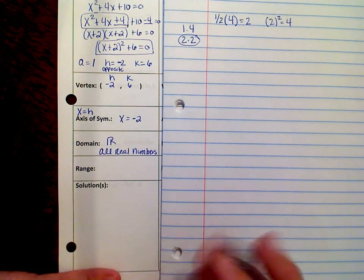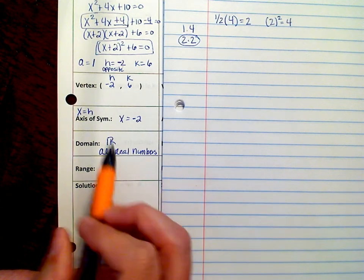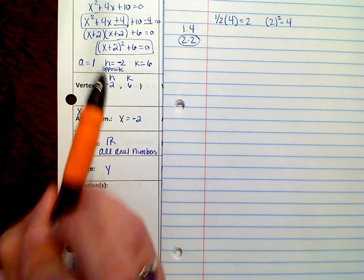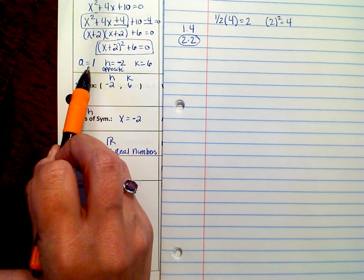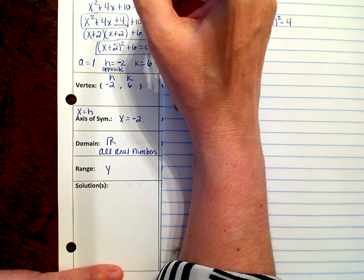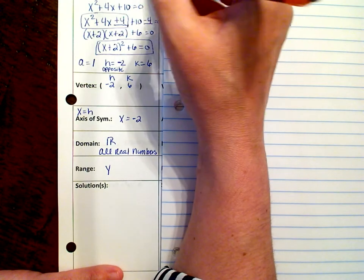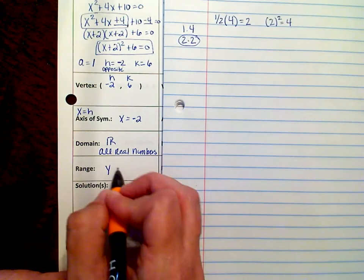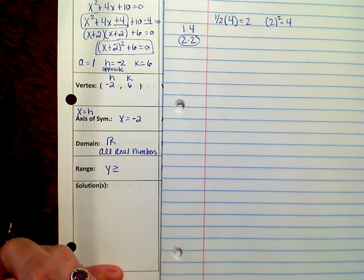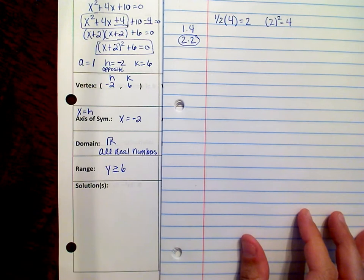To find the range, remember it's your y values. And we're going to look back at a. Since a is positive, that tells me that my graph is going to open up like this. So my vertex is down here, which means it has a minimum. And my arrows are pointing up, so that's greater than or equal to whatever k is, and k is 6.